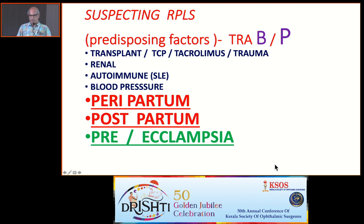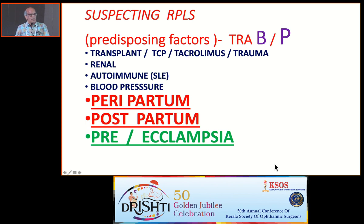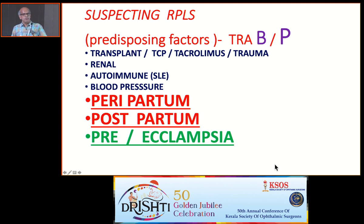When do you suspect this syndrome? Remember the mnemonic TRAP. T means transplant — post-transplant patients, any organ transplantation — and thrombocytopenic purpura, and tacrolimus-like immunosuppressive drugs. R is renal dysfunction, dialysis or nephritis. A means autoimmune disorders like SLE. The most important is B — blood pressure, acute rise in blood pressure. And P means preeclampsia and eclampsia. 90% of cases are peripartum or postpartum.